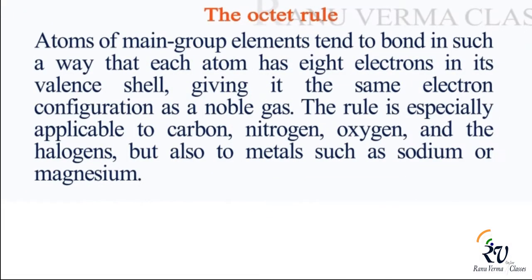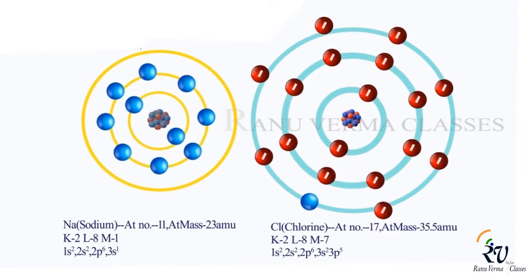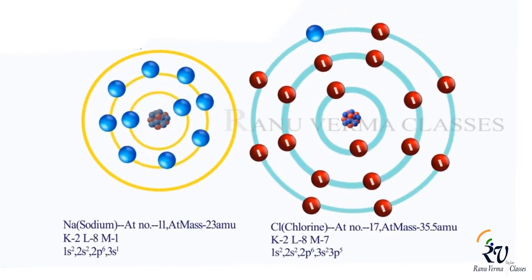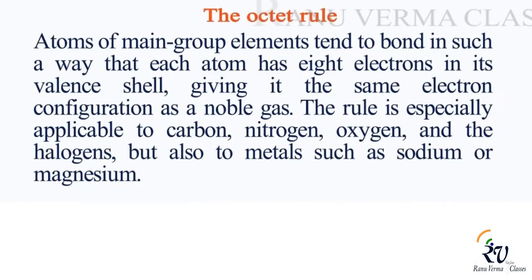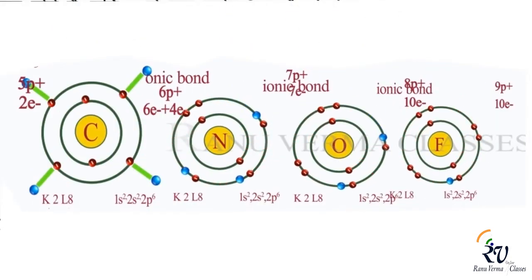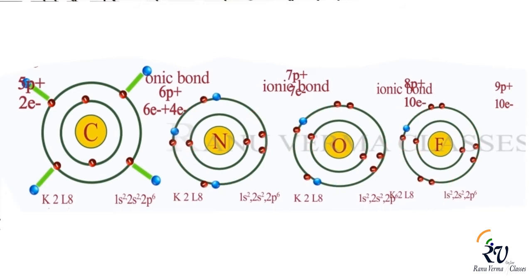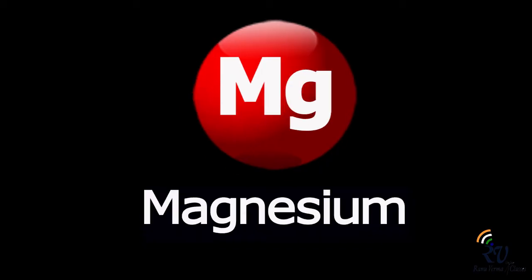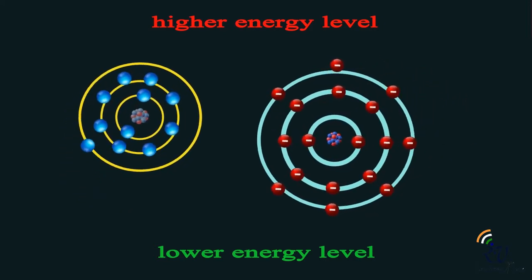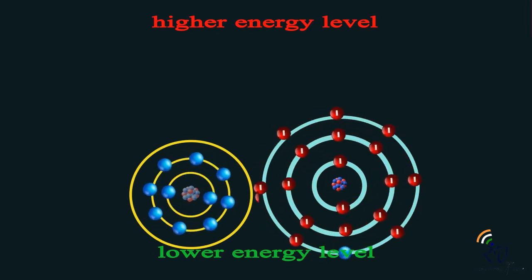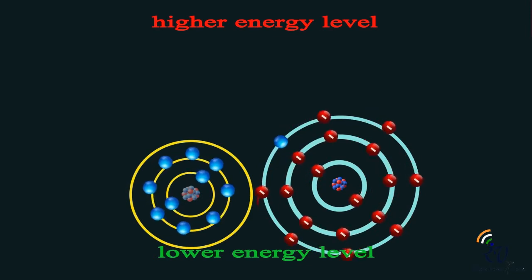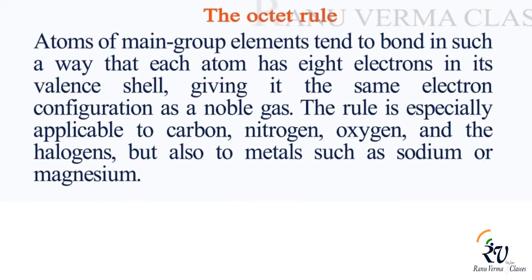Now what is octet? Octet means 8. Atoms of main group elements tend to bond in such a way that each atom has 8 electrons in its valence shell — that is, in its outermost shell — to acquire the noble gas configuration of its nearest noble gas element. This rule is especially applicable to carbon, nitrogen, oxygen, and the halogens, and also to some metals like sodium and magnesium. When any element completes 8 electrons in its outermost shell, it acquires the lowest energy level, and every element tends to be at a lower energy level. This is known as the octet rule.